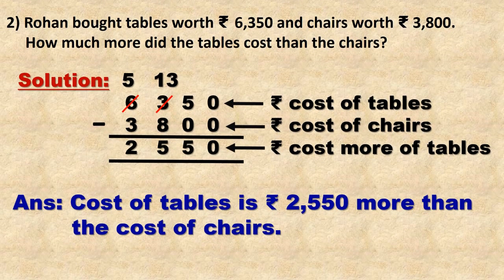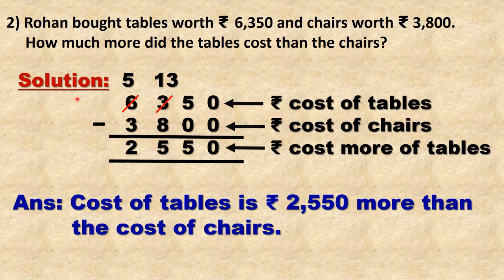Second example: Rowan bought tables worth rupees 6,350 and chairs worth rupees 3,800. How much more did the tables cost than the chairs? Method: subtraction — minus sign.